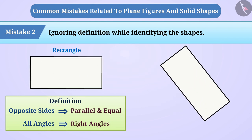If we show them a rectangle whose orientation is different from the rectangle of their understanding, then they are unable to identify this shape. This is because they do not identify shapes on the basis of definition.